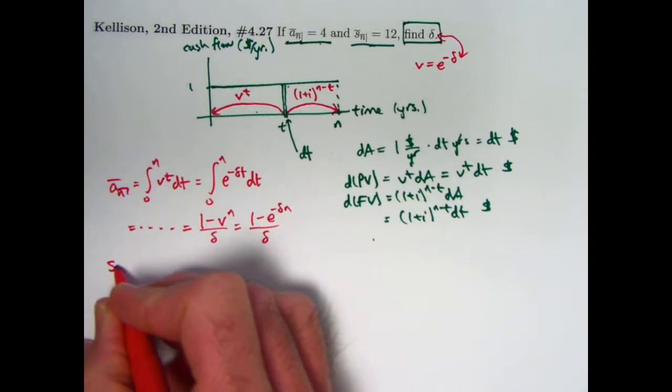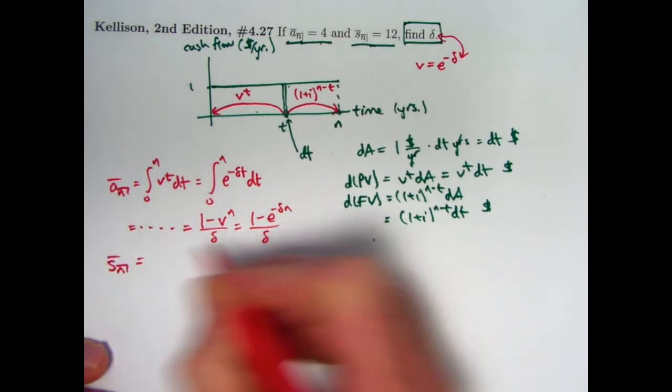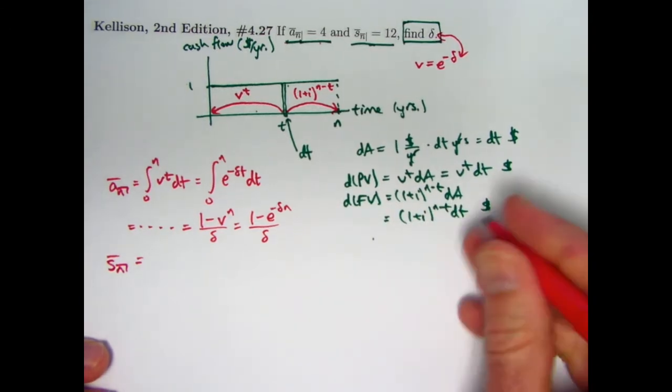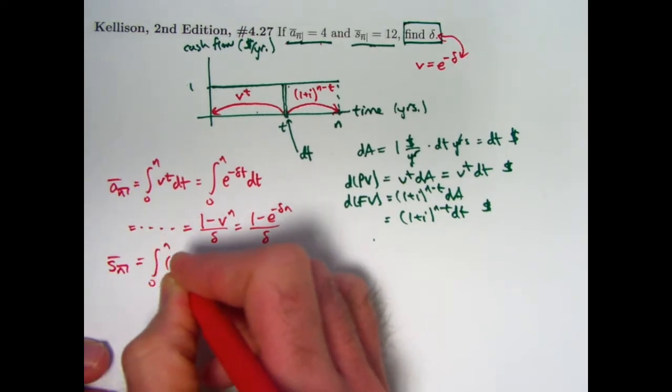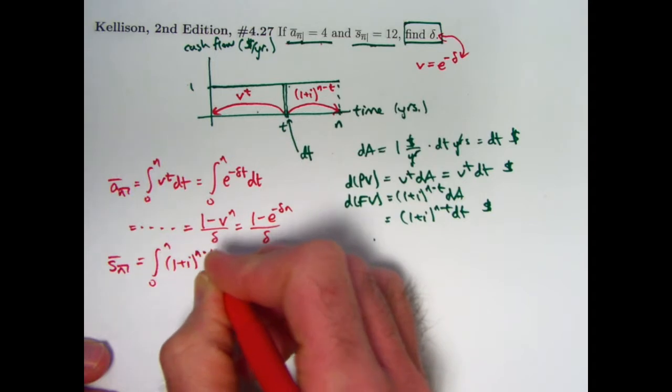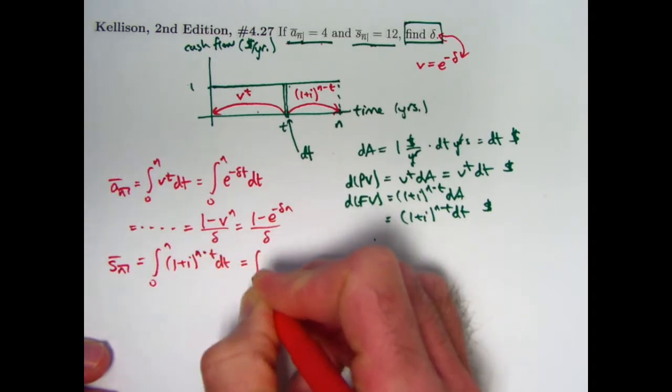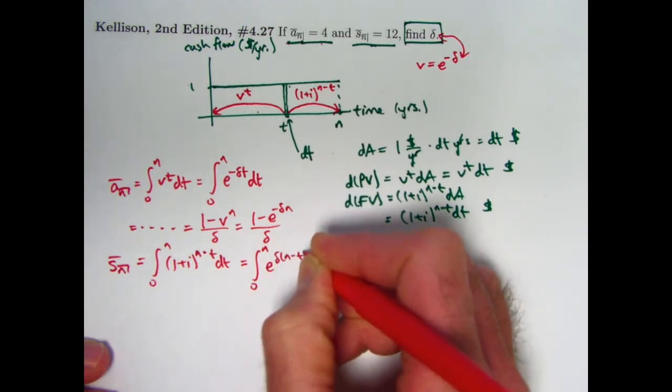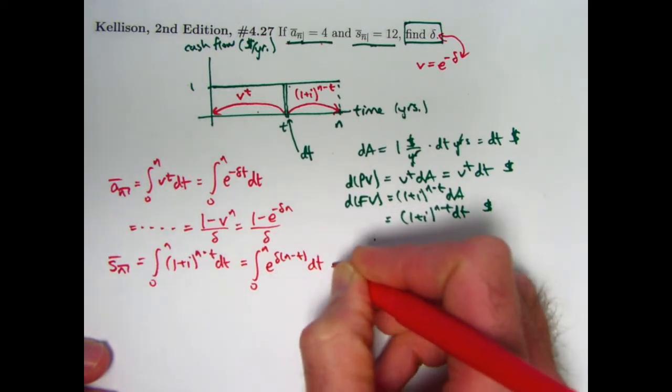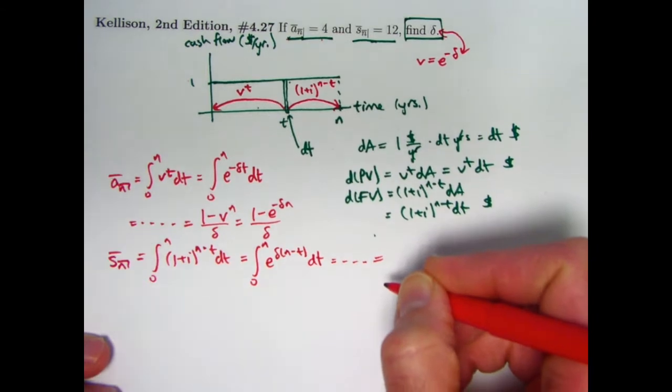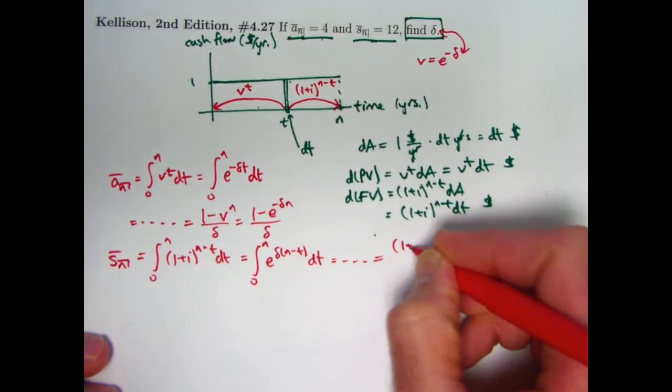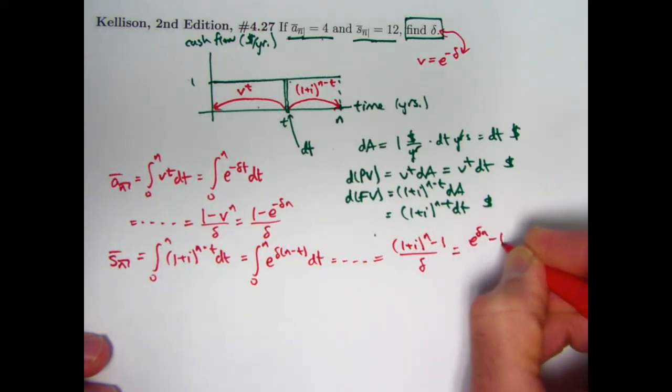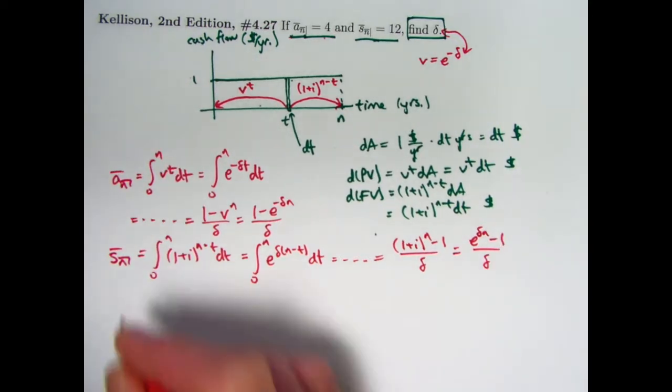How about the future value? Evaluate at time n of this continuous income stream, then I need to add up the dfv's. I need to integrate this thing from 0 to n, integrate 1 plus i to the n minus t dt, or if you prefer, integrate from 0 to n, e to the positive delta times n minus t dt. And if you do either of those integrals, you'll typically see the answer written in one or two ways again: either 1 plus i to the n minus 1 over delta, or e to the delta times n minus 1 over delta. Both of those are the same and are equal to the future values.